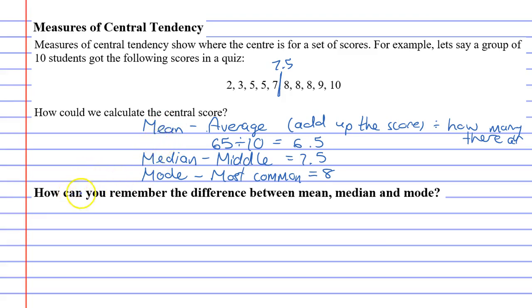Now, how can you remember the difference between mean, median, and mode? Quite often people get mixed up between the three. They all start with M, which further confuses people. I've got a little method that I use—I just write them down.